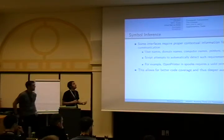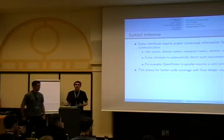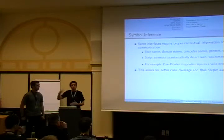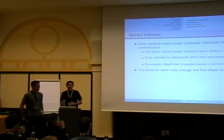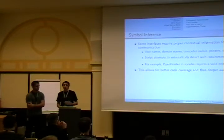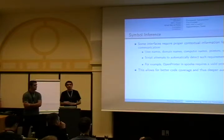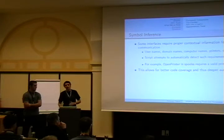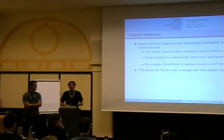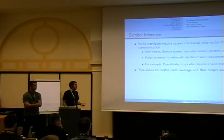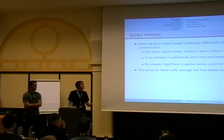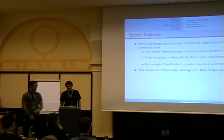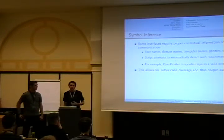Symbol inference helps with context handles. Often you need a valid context handle before calling the rest of the opcodes. We want to use provided symbols to figure out which opcode to call first. We look for any IDL that takes a context handle as an out parameter. For certain things we can use a symbol like 'OpenPrinterEx' — if we see something like that, we may realize that to call anything in the spooler service, we want to call the ones that open a printer first. This allows for better code coverage and lets you access more of the opcodes you want to audit.